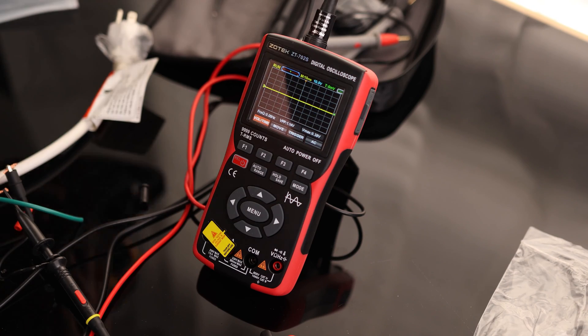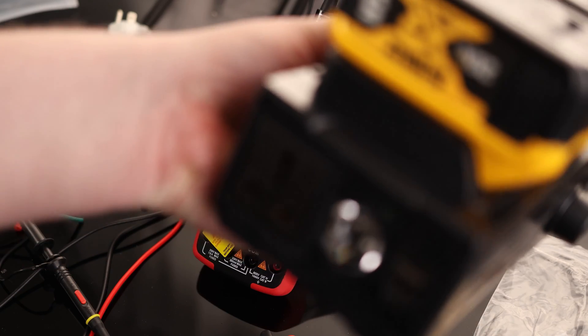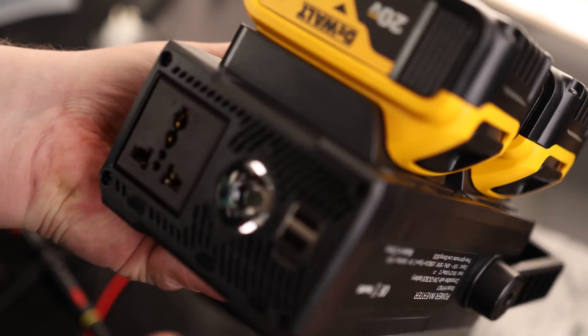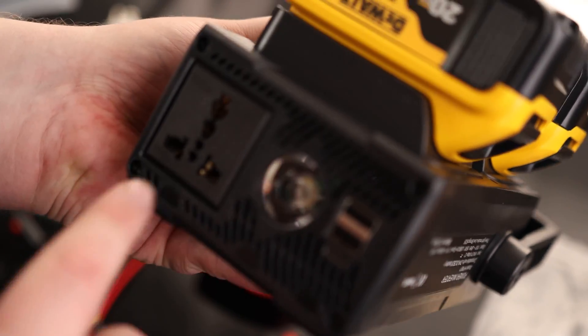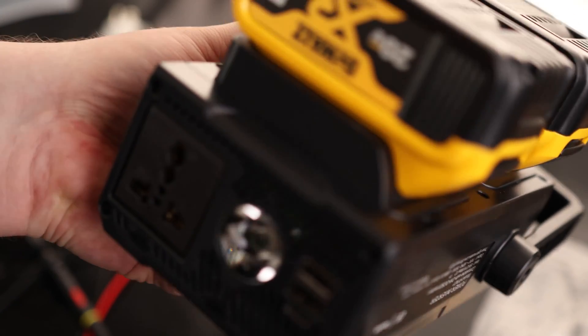So the next thing I want to do is I want to use this to check one of these inverters. So this is going to take DC power and try to turn it into AC power. That can either be a pure sine wave or a modified sine wave. And we can use this tool to check that and see which kind it is.